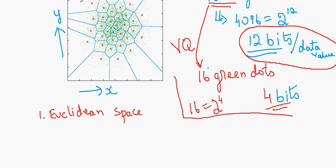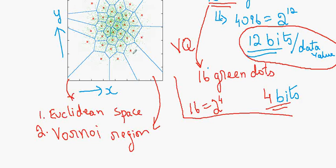Here the entire space is a Euclidean space in this figure. So second one is Voronoi region. So each region that's within the blue area, blue borders is called Voronoi region. The entire thing is a Euclidean space. Each region is a Voronoi region. And each red dot is a code vector.